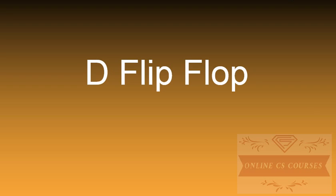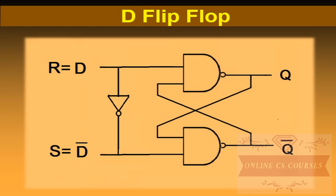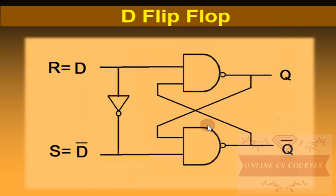First we will discuss the block diagram and the logic diagram for the D flip flop. D is the data line, and here the complement is applied so the next value is D complement. This is the first input, and D is here — this is D and this is the complemented value of D. If D is 1, the complement is 0, and if D is 0, the complement is 1.